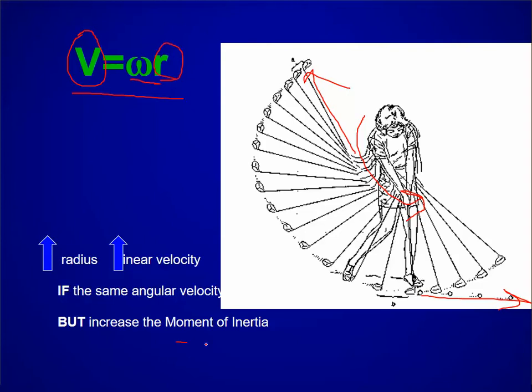So the increase in moment of inertia makes it very difficult to maintain this angular velocity. So to maintain angular velocity, you need to be stronger.